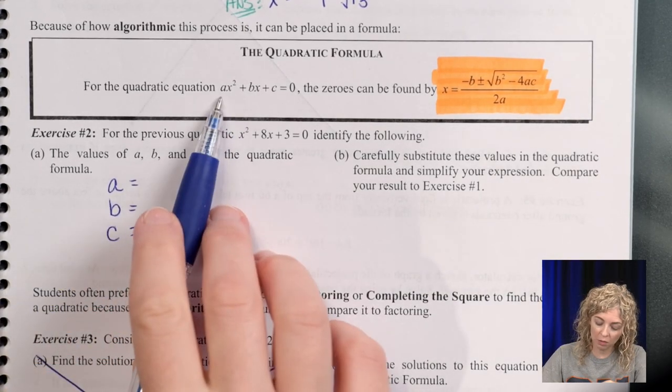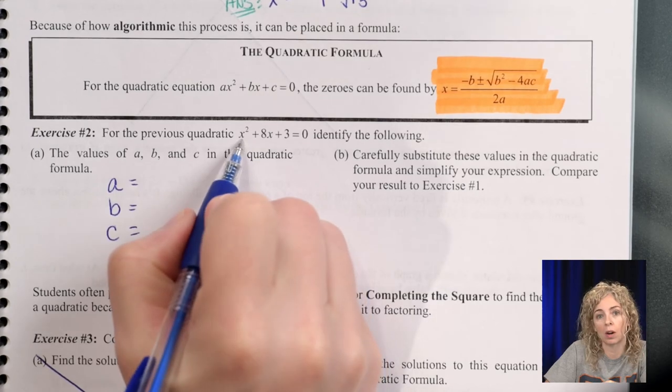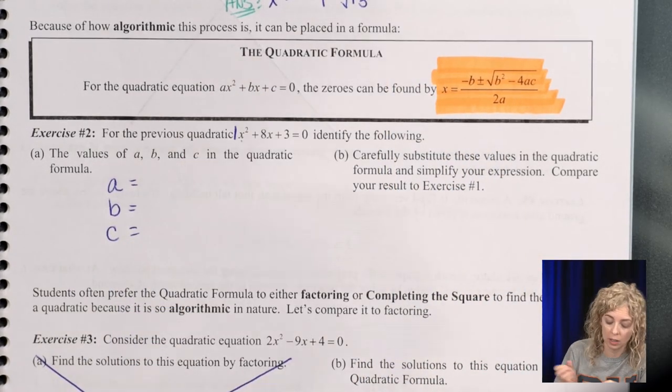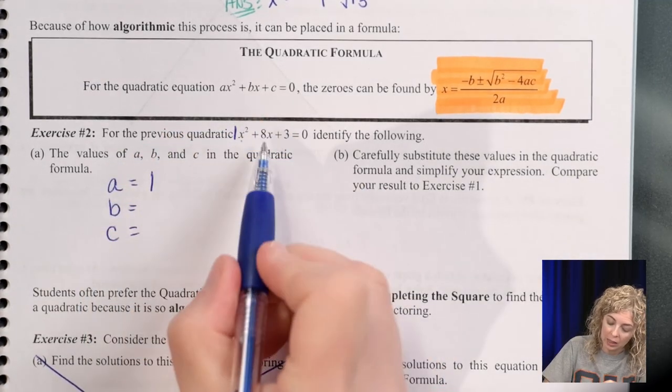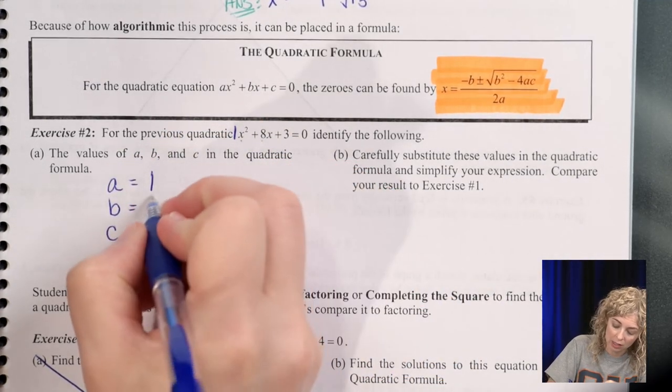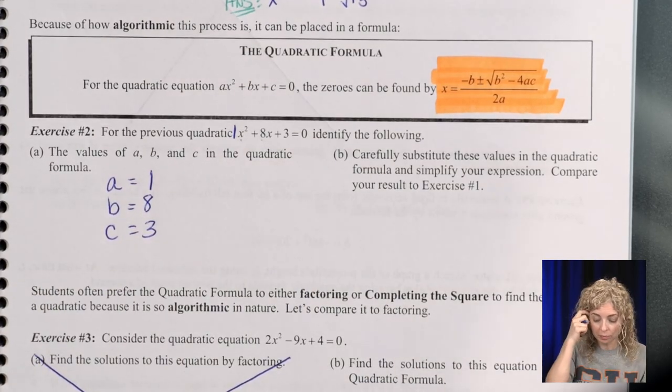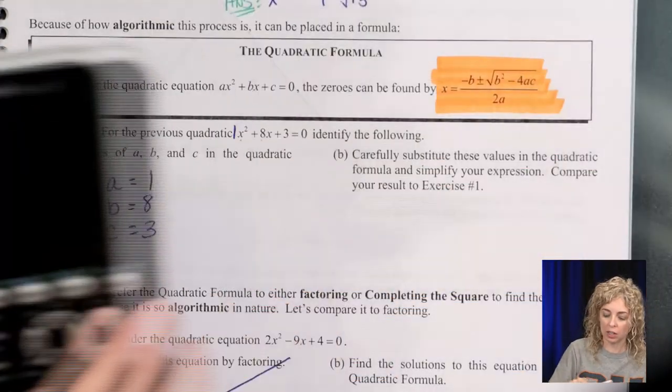So a is the number in front of the x squared. So here's x squared, and I don't see a number there. So remember, it's going to be a 1. So a is 1. They go in order. The next number we see is an 8, and the last number is a 3. So let's plug it in, and have your calculators handy too.